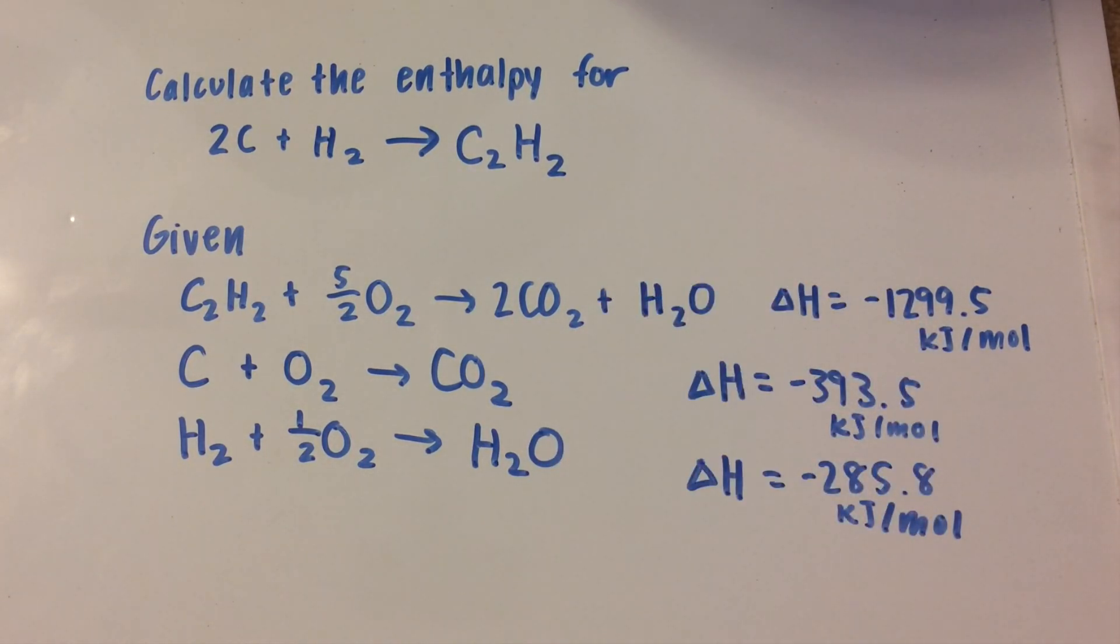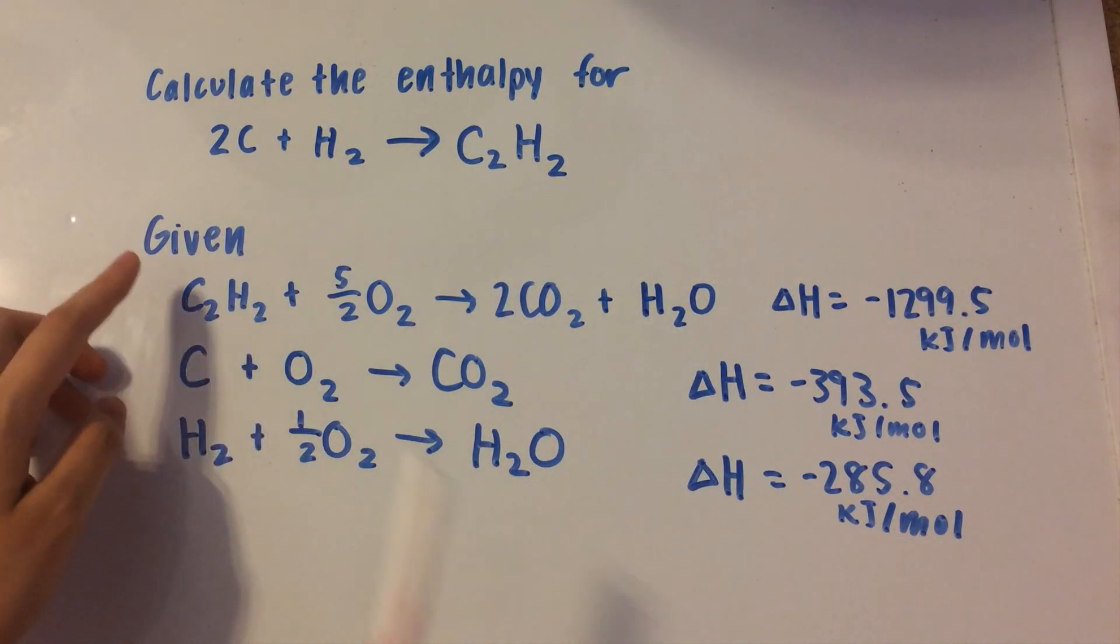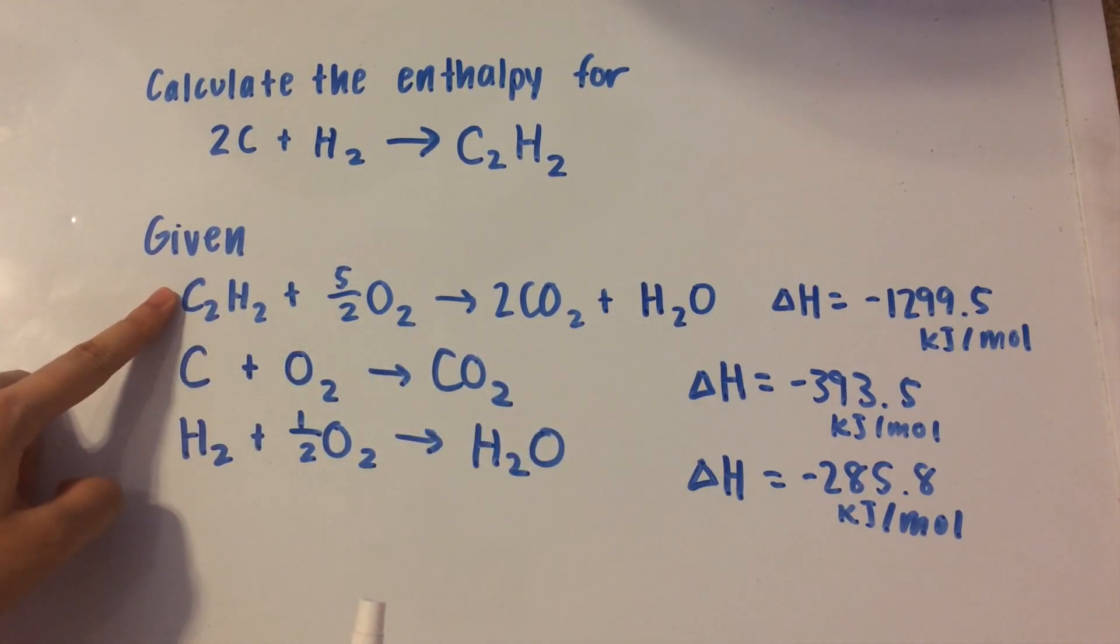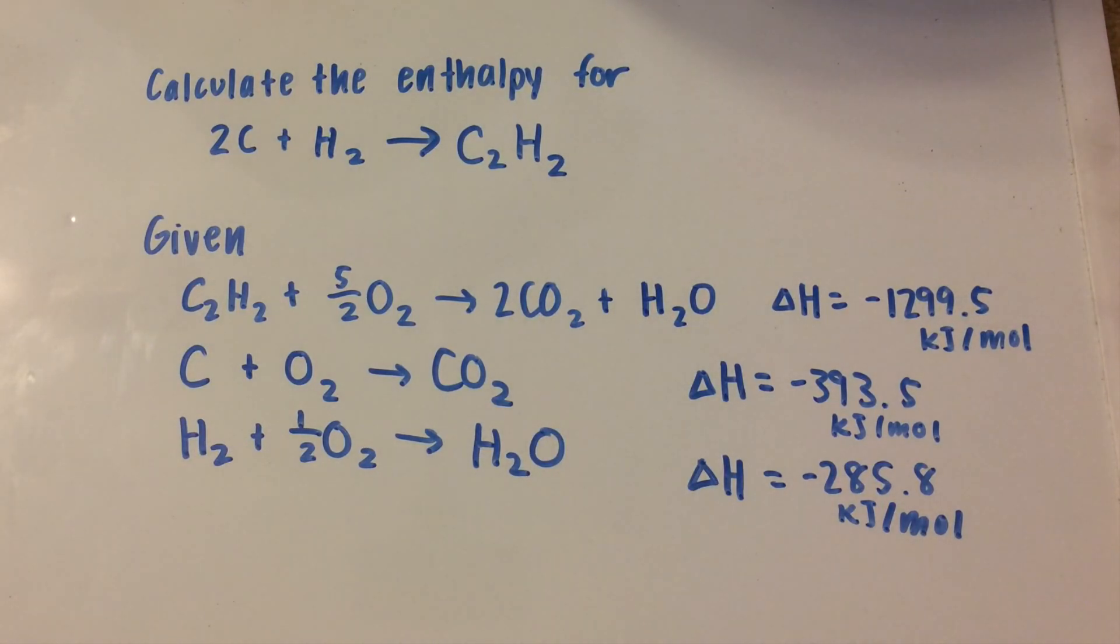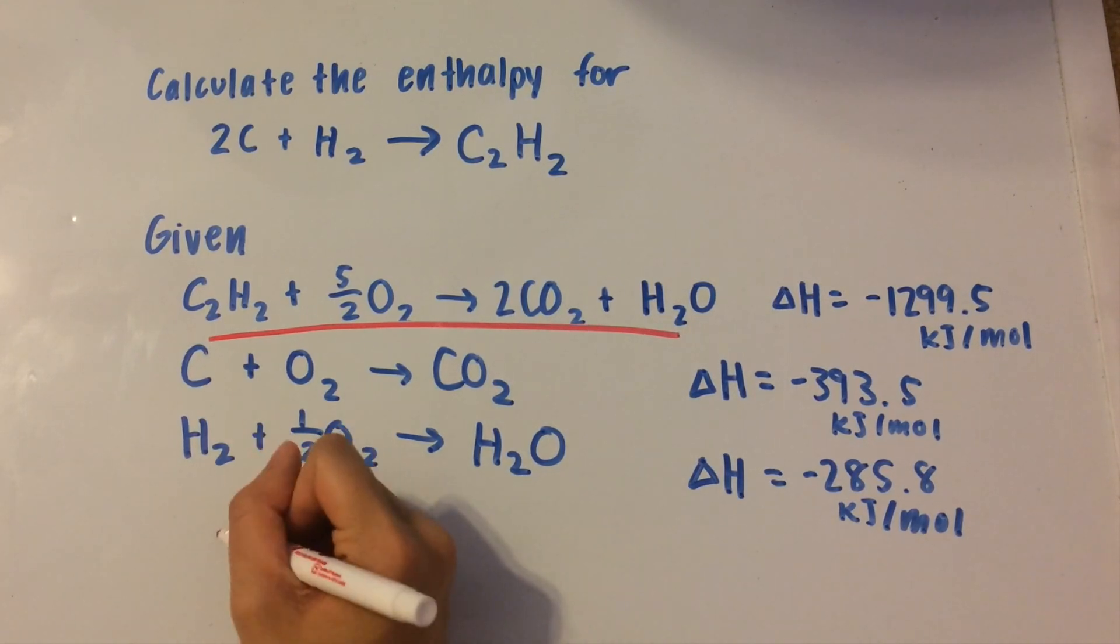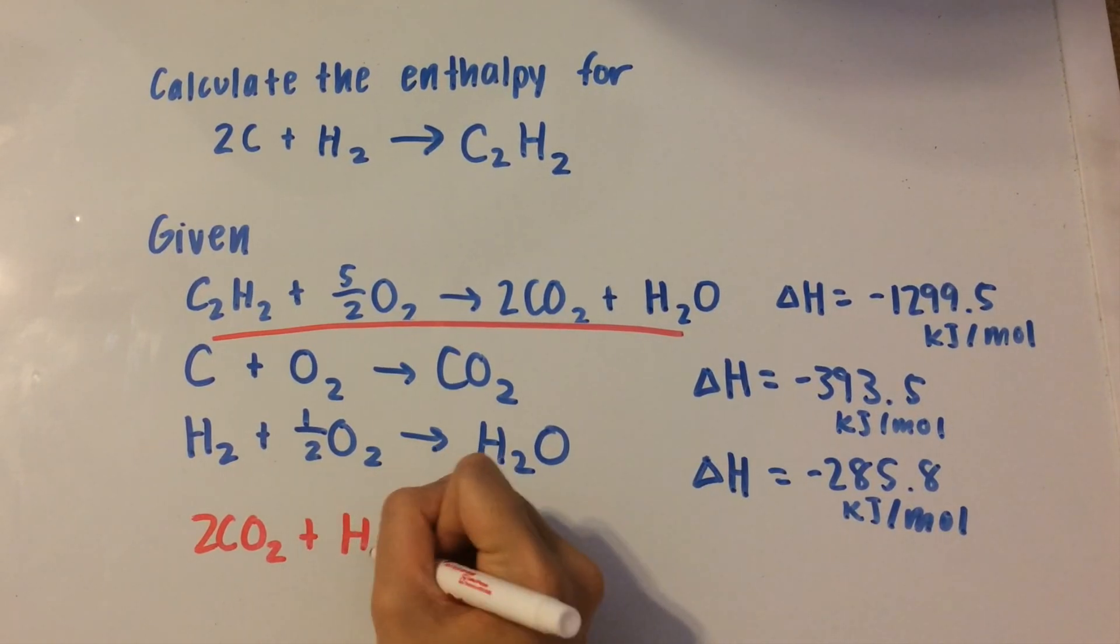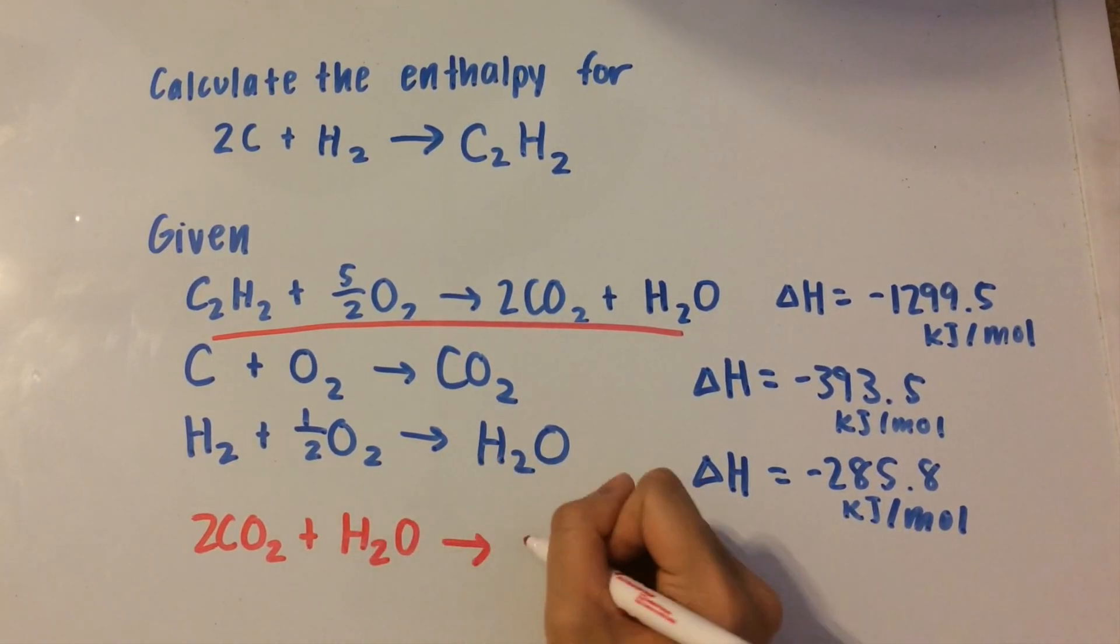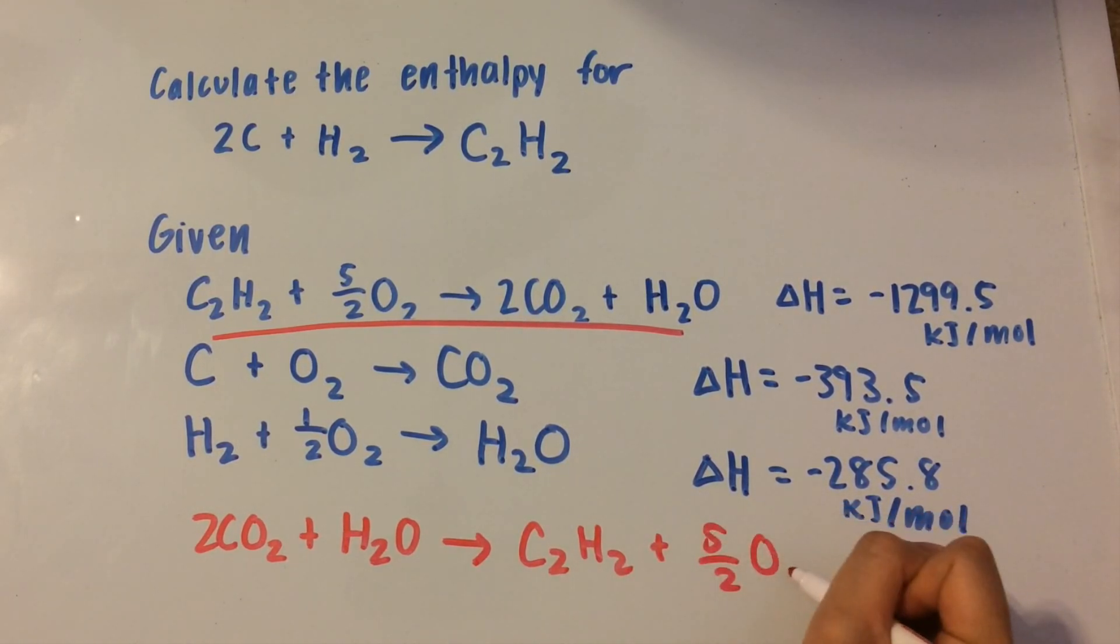So let's do this. First, we need to manipulate these three equations so that they add up to this. I see here in this first equation that we have C2H2 on this side, on the left side, but the total reaction requires the C2H2 to be on the right side. So let's just reverse this whole first equation, and that will give us 2CO2 plus H2O yields C2H2 plus 5 halves of O2.